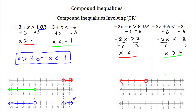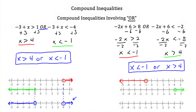To graph this second solution set, x is greater than 4. We go to 4 on the number line, put an open circle because it's greater than, not greater than or equal to, and shade everything to the right. Now we combine these two sets to get our final solution: x has to be less than negative 1 or x has to be greater than 4. We have key points at negative 1 and 4, both open circles, shading everything to the left of negative 1 and everything to the right of positive 4. This is the graph of our solution.